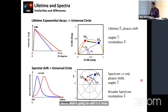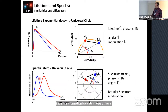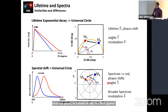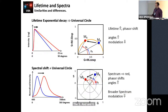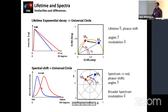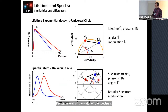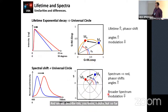We can do a phasor transformation. This transformation shows that a spectral dataset can be translated into a point in a phasor. Now this phasor, instead of only the first quadrant from 0 to 1, goes from minus 1 to plus 1 in both S and G. The position depends on the maximum or center of mass of the spectra, as well as the width of the spectra. The bluer the spectra, the shorter the phase, and the narrower the spectra, the larger the modulation. We have similarities and differences between lifetime phasors and spectral phasors.